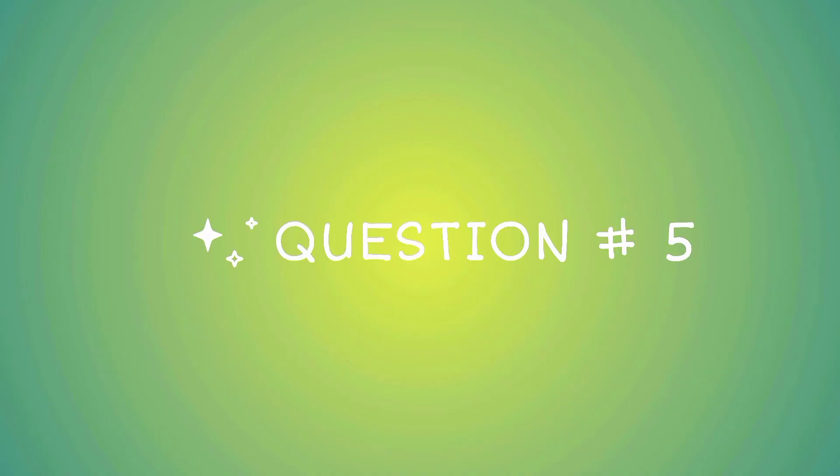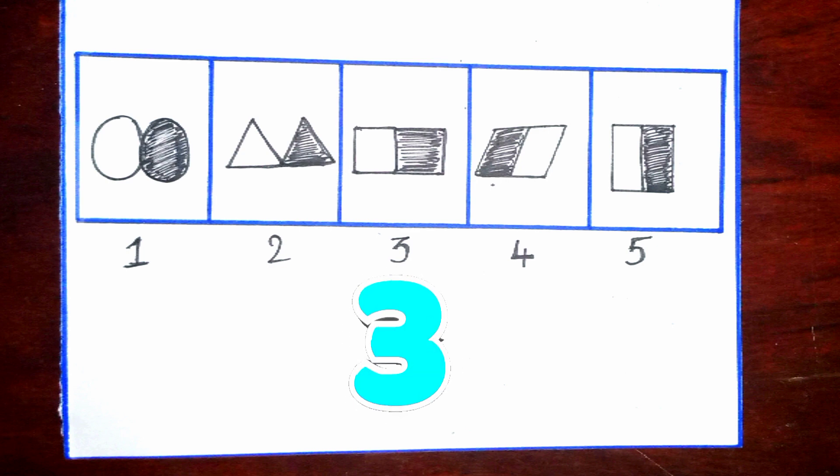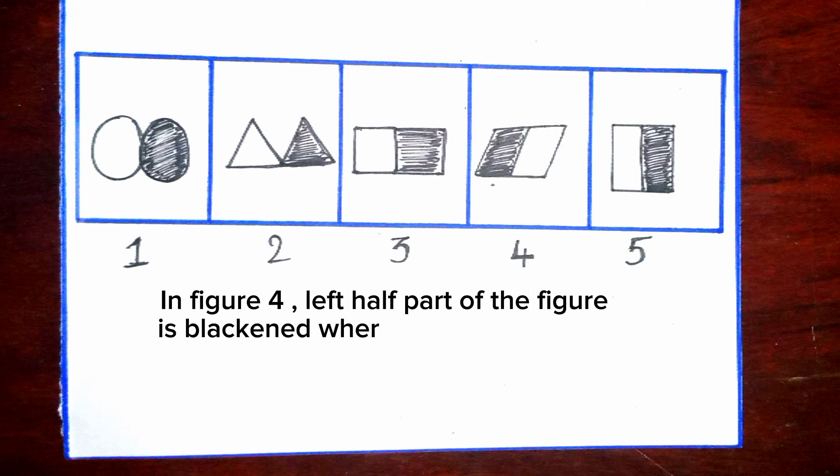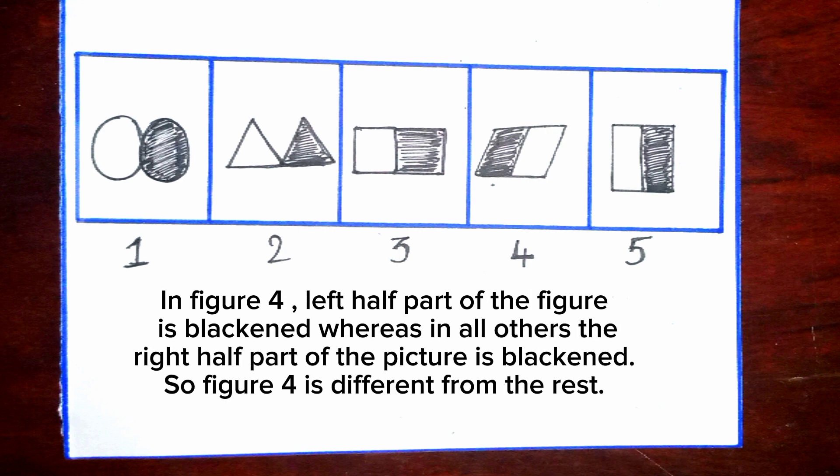Question number five. In figure four, the left half part of the figure is blackened, whereas in all others the right half part of the picture is blackened. So figure four is different from the rest.